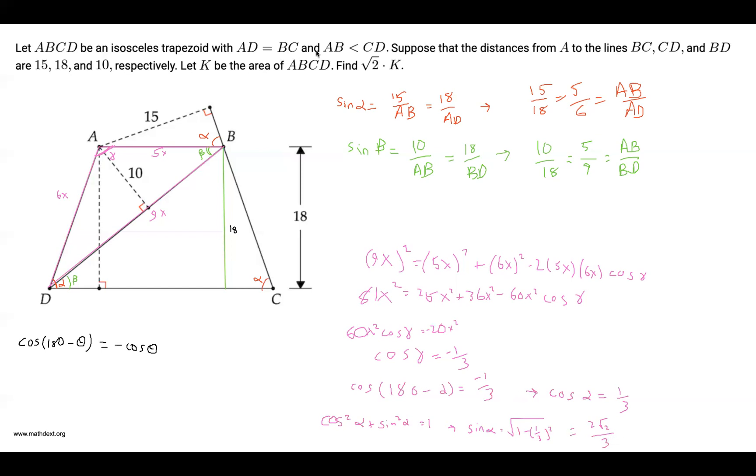Now look what we can do. Look back at this triangle over here. We had sine of alpha was 15 over AB. And I am going to clear out some space over here. I am going to clear out this and this and that. Maybe leave cosine as 1 third there. Now take a look at this triangle. We already stated that 15 over AB was sine of alpha. Now we know what sine of alpha is.